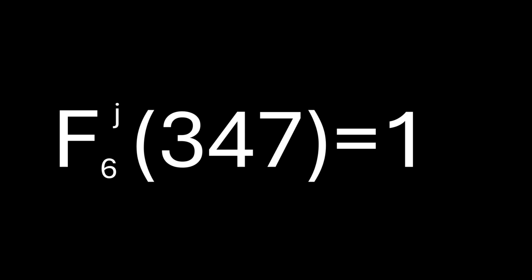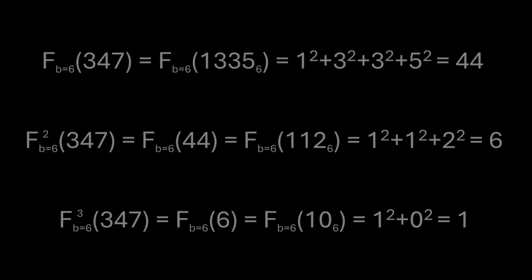Let's take a look at an example. 347 is 6-happy because after a few iterations of the perfect digital invariant function we get the invariant 1.